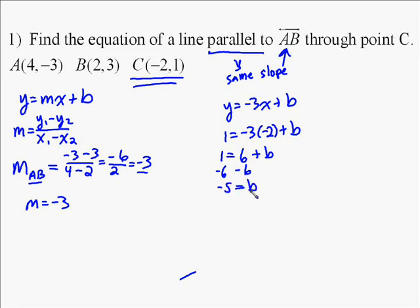So the solution is Y equals negative 3X plus negative 5. And the method was find the slope of the line we're parallel to, that becomes the slope of the line we're finding, plug that into Y equals MX plus B, plug in your point, solve for B, and then write out your answer. Y equals negative 3X minus 5.